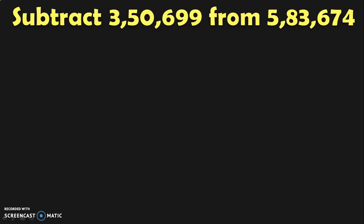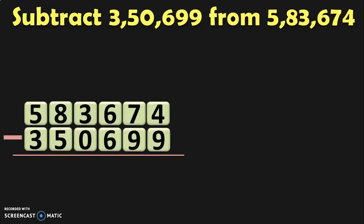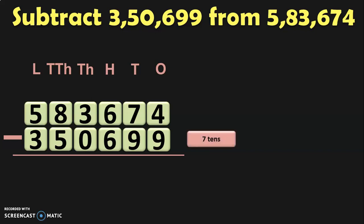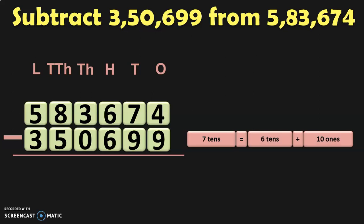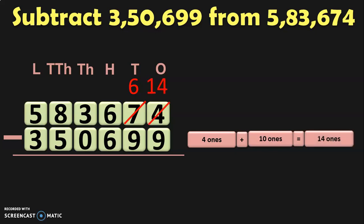Subtract 3,50,699 from 5,83,674. Both these numbers are 6-digit numbers, so write them one below the other. Write their place values and begin the subtraction from the ones place. 4 minus 9 cannot be done because 4 is lesser than 9. So you borrow from the tens place where you have 7 tens, which can be regrouped as 6 tens plus 10 ones. So 7 tens will now become 6 tens. When you give 10 ones to the ones place where you already have 4 ones, 4 plus 10 gives you 14 ones. So now we have 14 minus 9 in the ones place, which is 5.